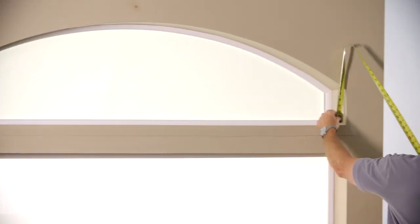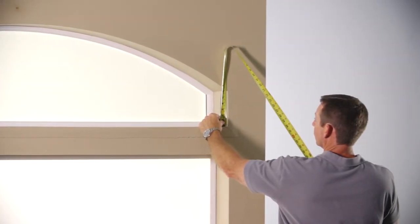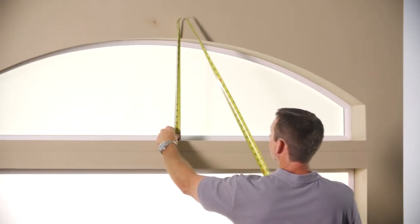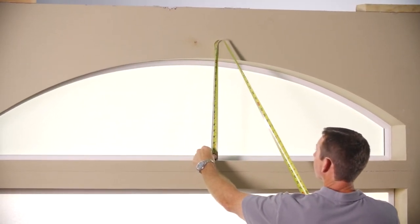You would then measure the window opening height in three places: at the left, at the center high point, and at the right side, and then record all three of these measurements on the order form.